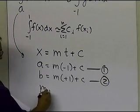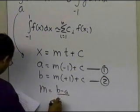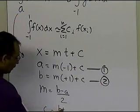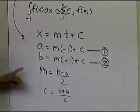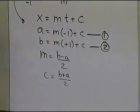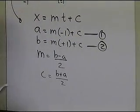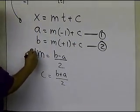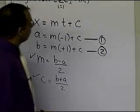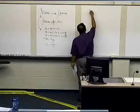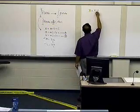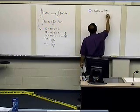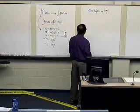So m turns out to be b minus a divided by 2, and c turns out to be b plus a divided by 2. That's what you get by solving these two equations, two unknowns, which means that I can do the transformation of x going to t by using this value of m and this value of c. So what I get is x equals b minus a divided by 2 times t, plus b plus a divided by 2. That's the transformation.